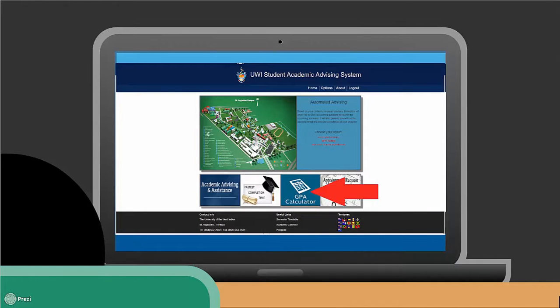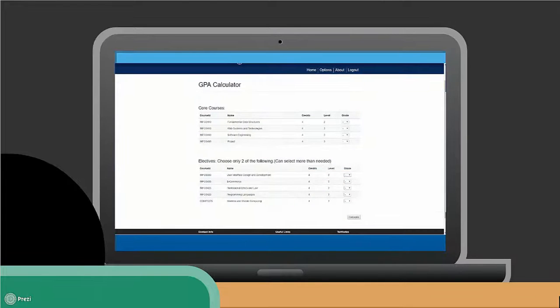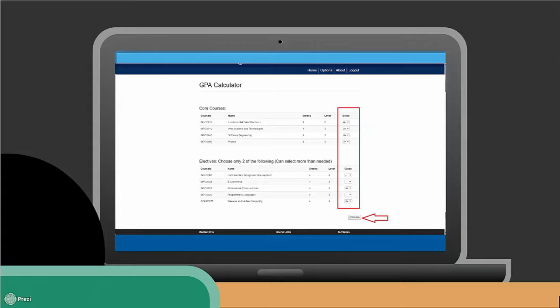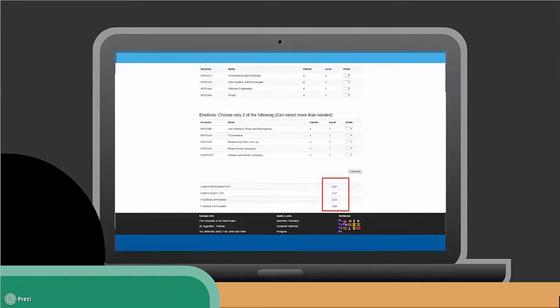Another feature is the GPA calculator, which allows students to project their GPA. The student is presented with all the courses they have remaining to complete their degree. They can simply select the grades they want, and after selecting all desired options, they can click calculate to see the result. The current and newly calculated GPA is presented to the user.